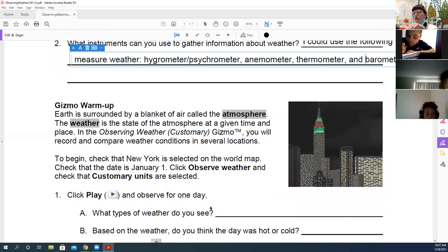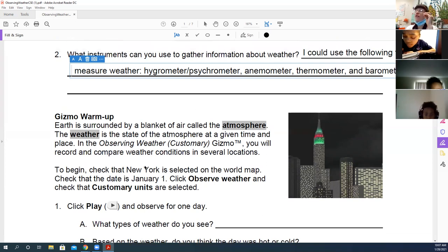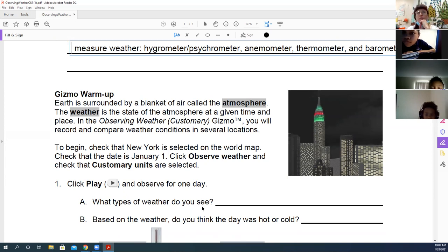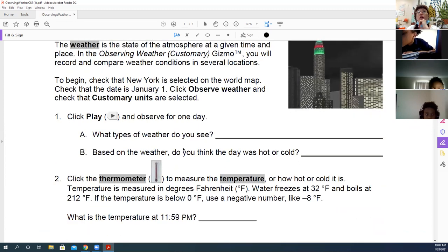What we're going to do today, and I'm going to let you work in partners is we're going to observe the weather in different cities at different times of the year. When you do a gizmo, it is super important that you're reading every direction because it tells you exactly what to click. Sometimes you need to change the date. Sometimes you need to change the time of day. Sometimes you need to change the location. So make sure you're reading through each and every single step and filling in the blanks after you follow the directions.